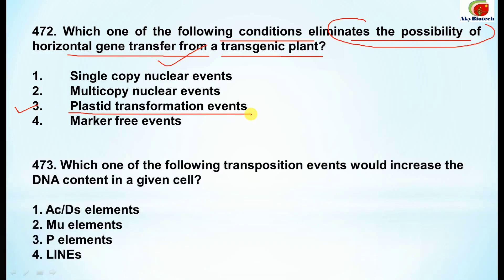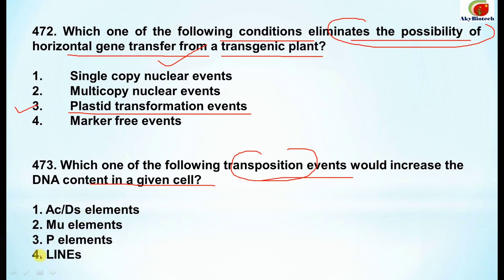Question 473: which one of the following transposition events would increase the DNA content in a given cell? The correct option is LINEs — this is the transposition event that leads to increased DNA content in a given cell.